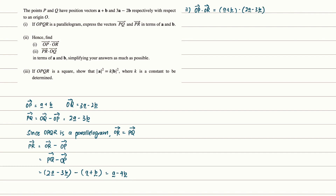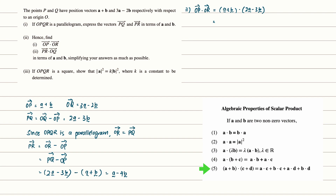We can use the algebraic properties of the scalar product to expand this expression. We get 2 modulus A squared minus 3A dot B plus 2B dot A minus 3 modulus B squared. Simplifying, this gives 2|A|² minus A·B minus 3|B|². This is the expression for vector OP dot vector OR.